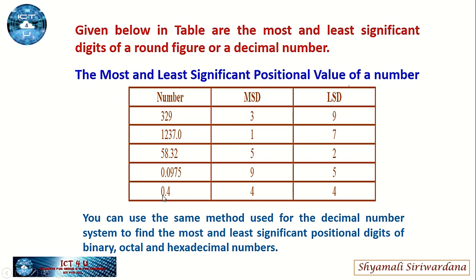Next one, 0.4 — 4 is both the MSD and LSD. We cannot assign any positional value to 0. You can use the same method used for the decimal number system to find the most and least significant positional digits of binary, octal, and hexadecimal numbers.